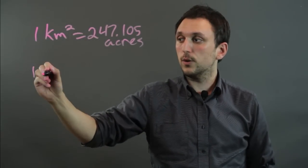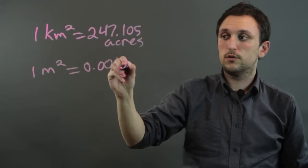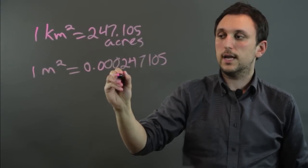Now one meter squared equals zero point zero zero zero two four seven one zero five acres.